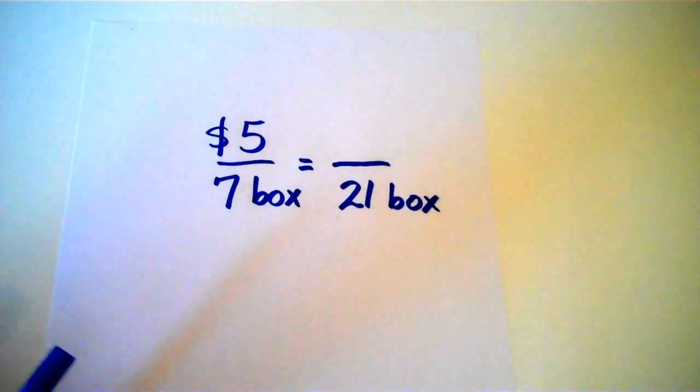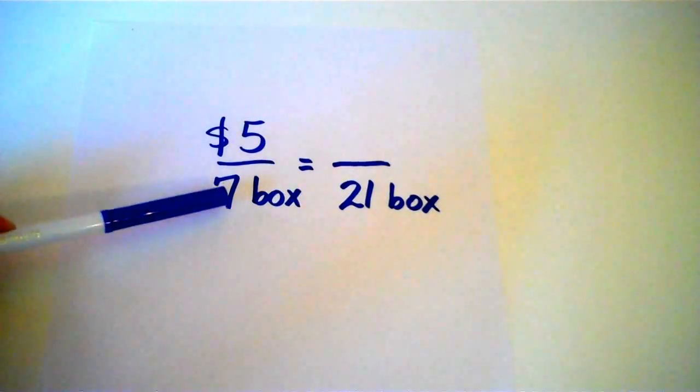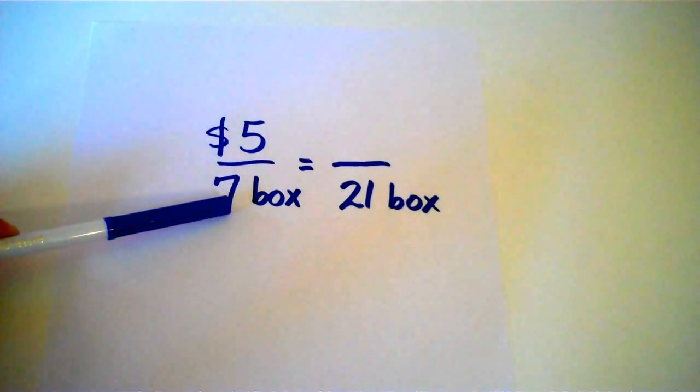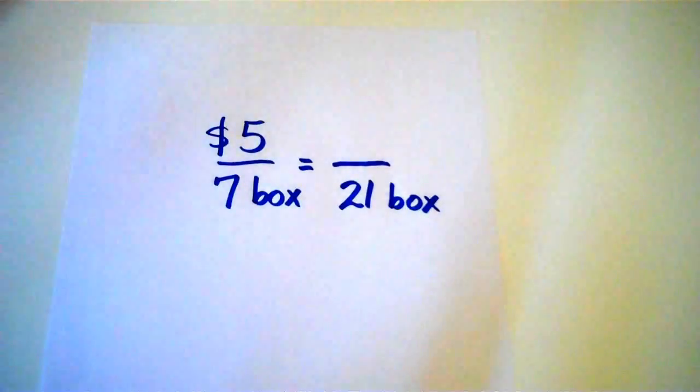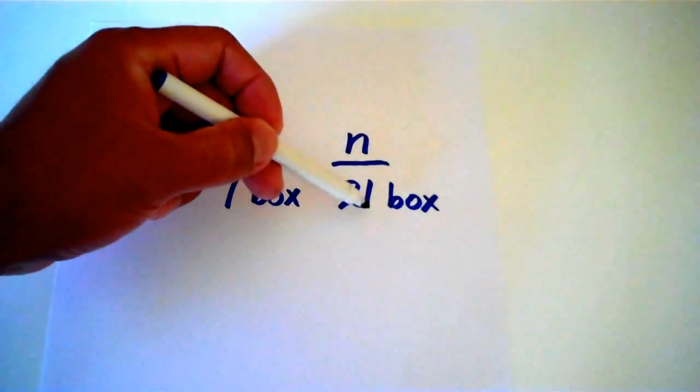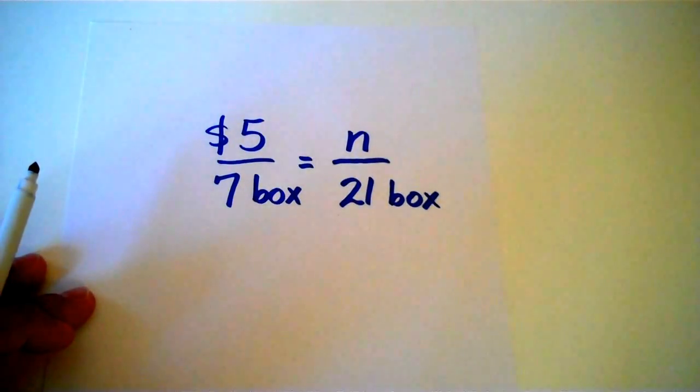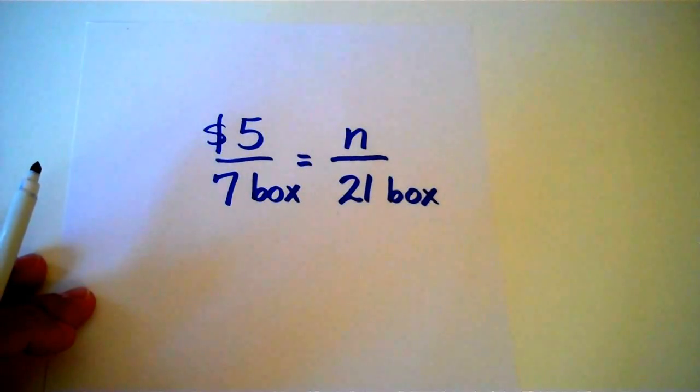So I have my previous equation of Jimmy makes $5 for every 7 boxes of cookies he sells. How much will he make? And again that's going to be N. How much will he make if he sells 21 boxes? So, this technique is called the Easy Z. And let's go to step 1.